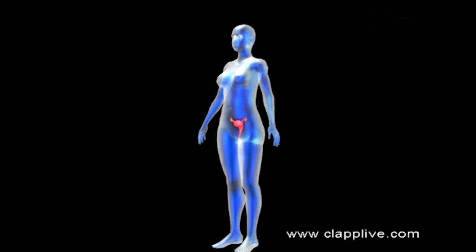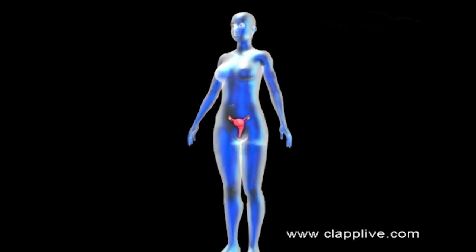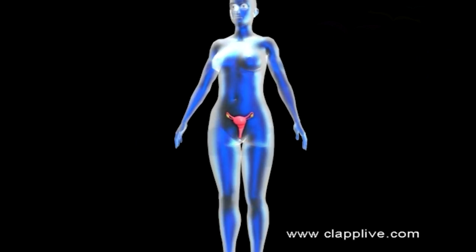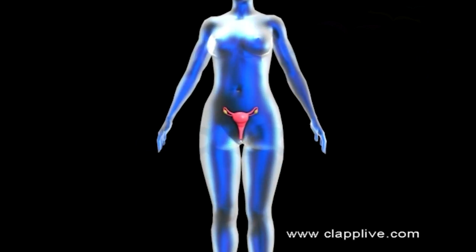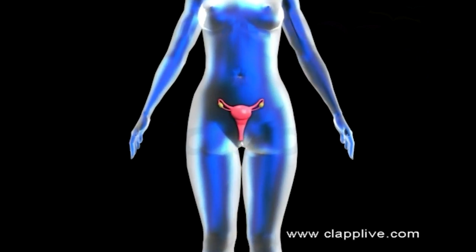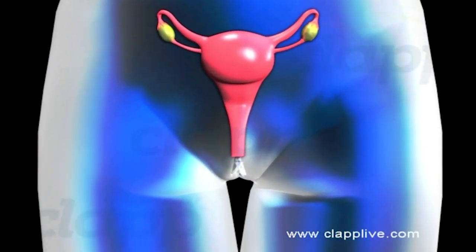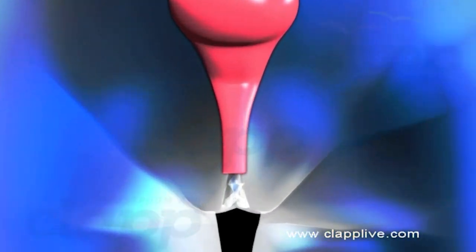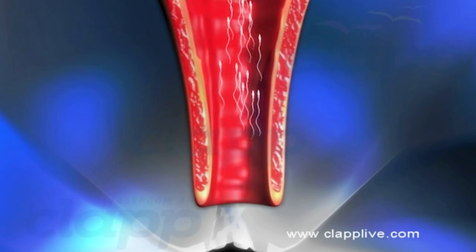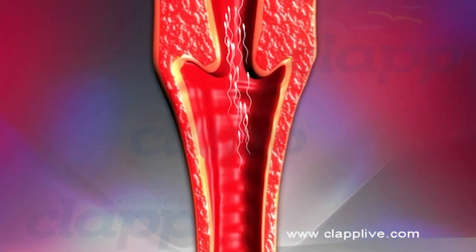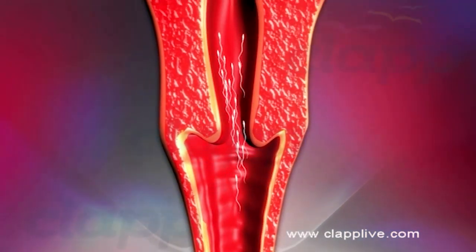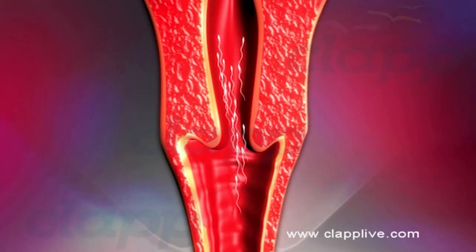Fertilization is an internal process in human beings. It takes place inside the body of the female. Semen, which contains the sperms, is introduced into the female genital tract by the penis during copulation. The deposition of sperms in the vagina is called insemination.